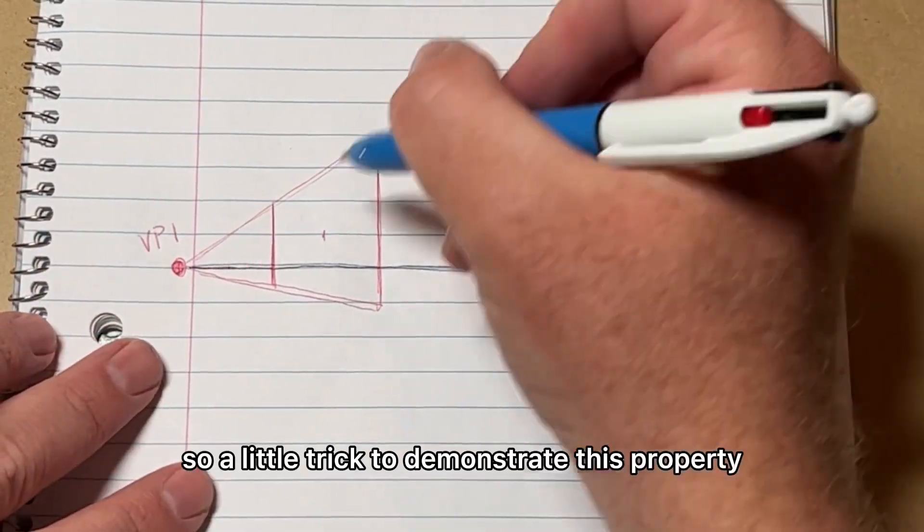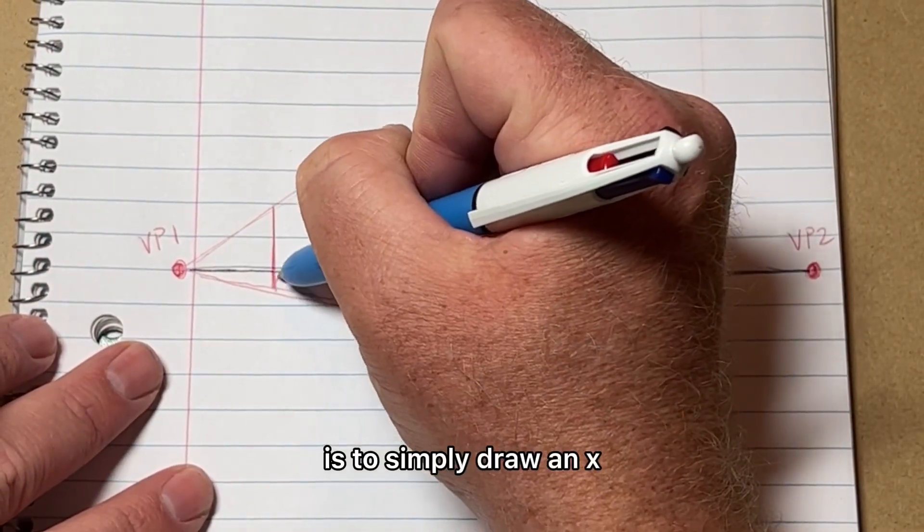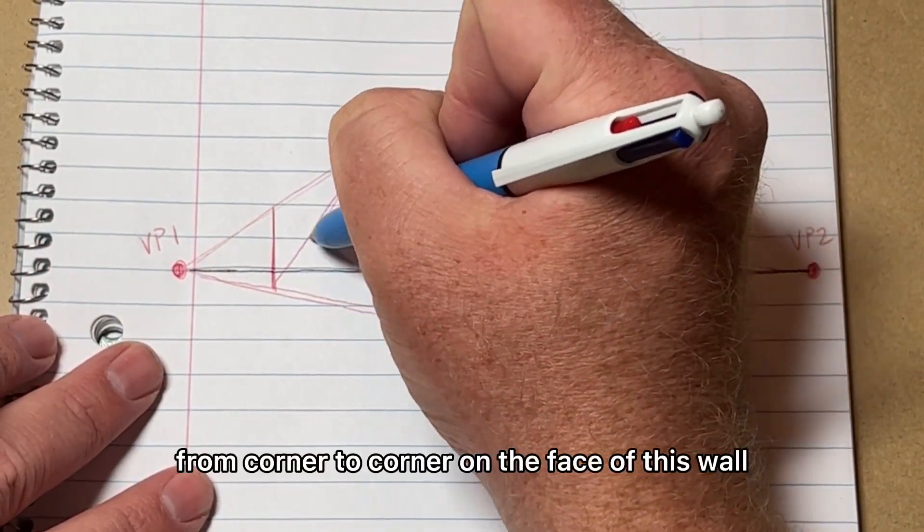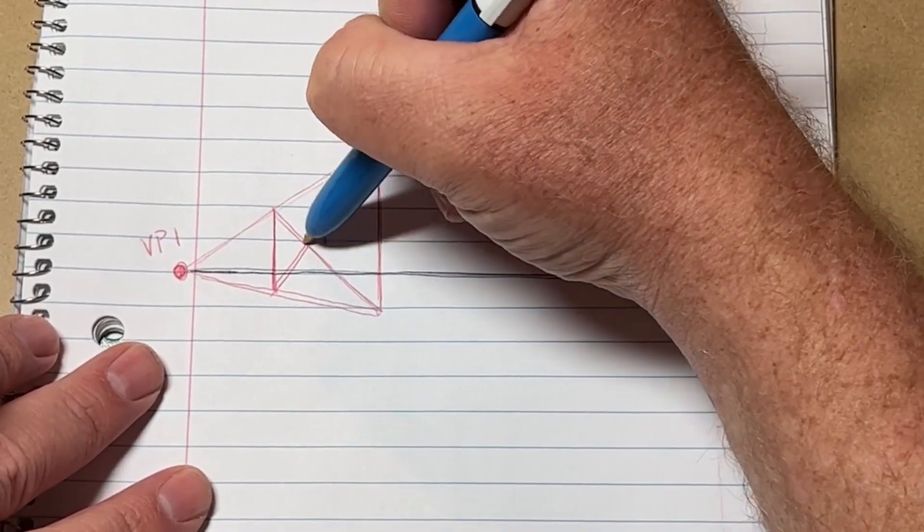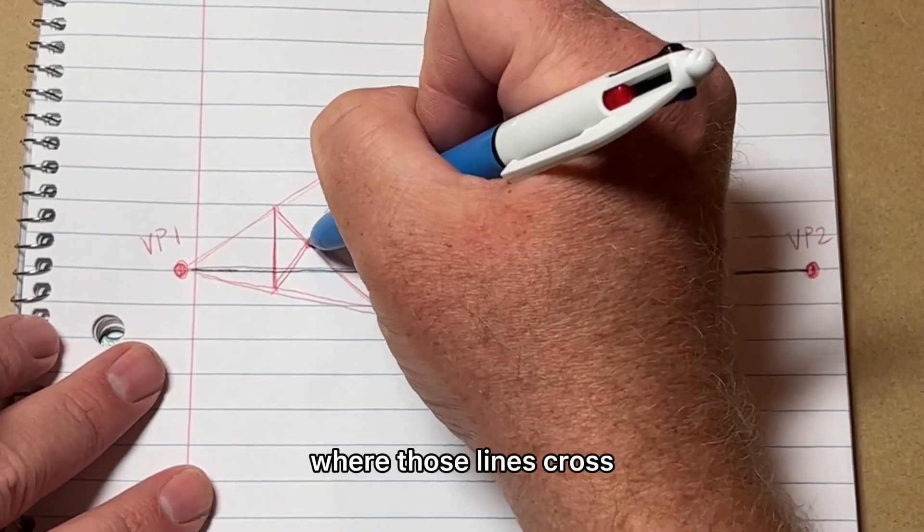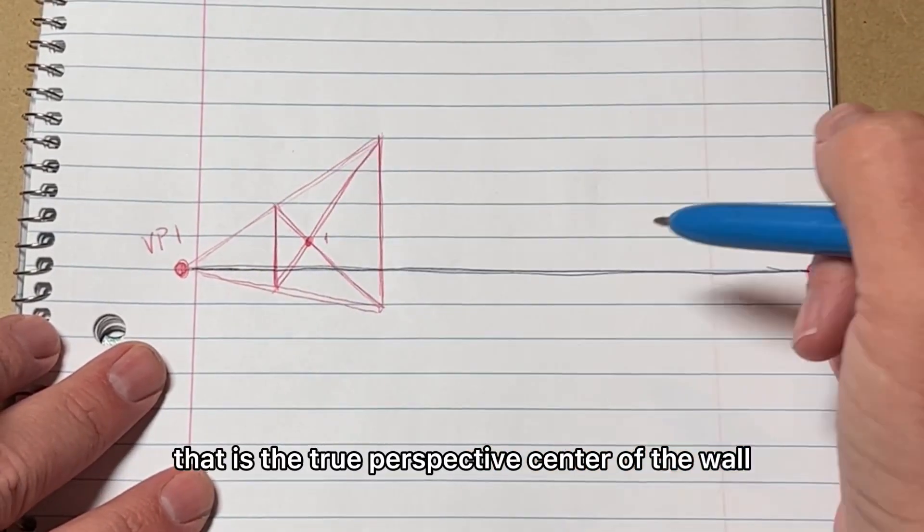A little trick to demonstrate this property is to simply draw an X from corner to corner on the face of this wall. And when you draw that X, where those lines cross is the true perspective center of the wall.